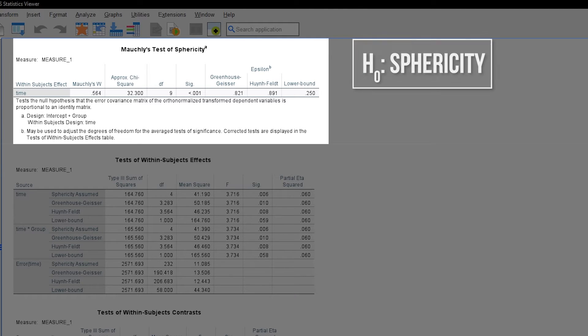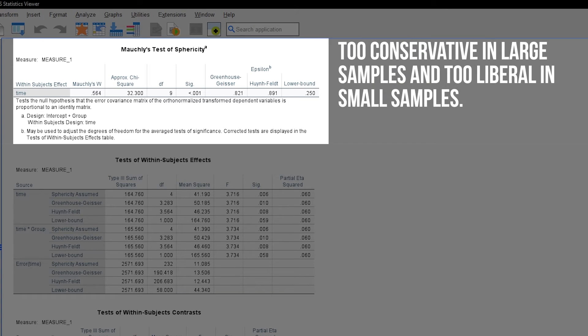If the p-value of the Mauchly's test is above the predefined threshold, sphericity can be observed. In my example, I have to reject the null hypothesis of sphericity. But beware, like the Levene's test or Shapiro-Wilk test, Mauchly's test is also too sensitive for large samples and has too little power for small samples. See Field pages 654 to 656.